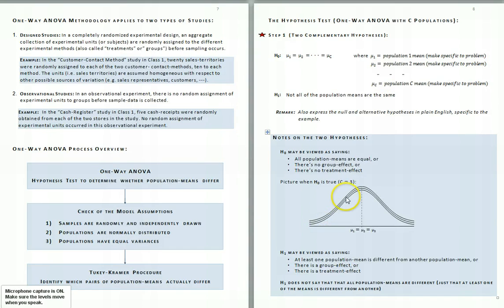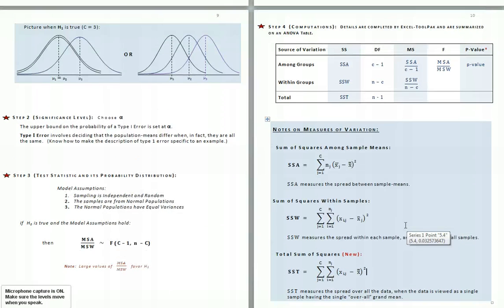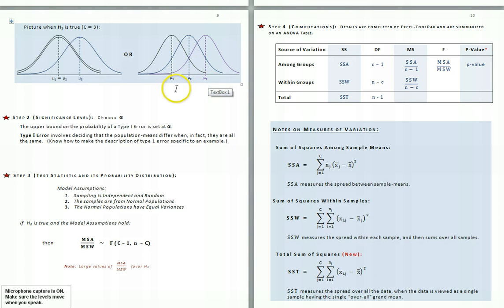Here's a picture indicating the situation when H0 is true: all the population distributions lay on top of each other. Here's a picture indicating the situation when H1 is true, where at least two of the population means are different. These pictures are for three populations. That would mean, for example, that two population means could be the same and the other population mean would be different, or each one of the population means could be different from each of the others.